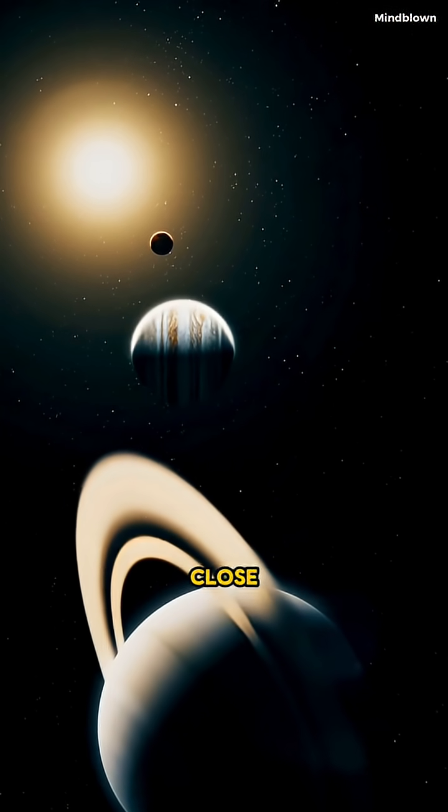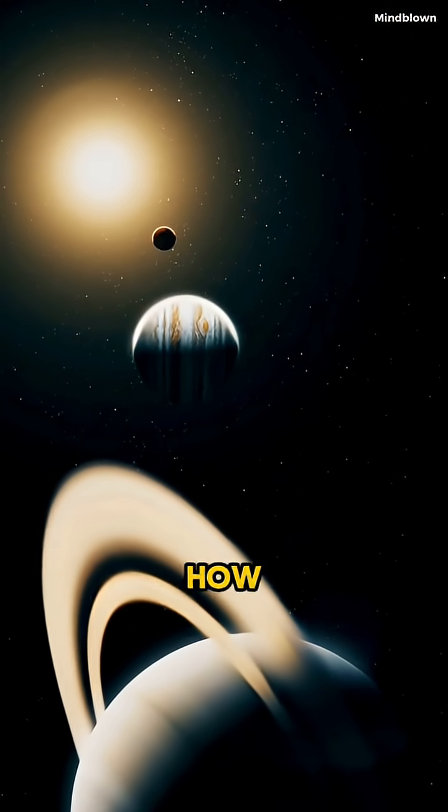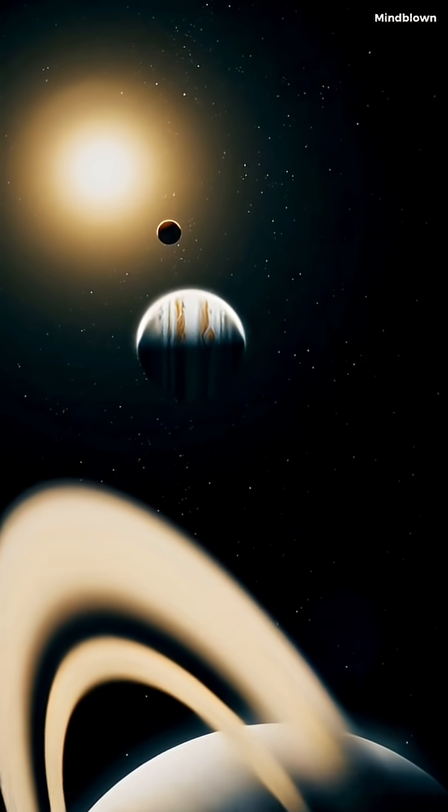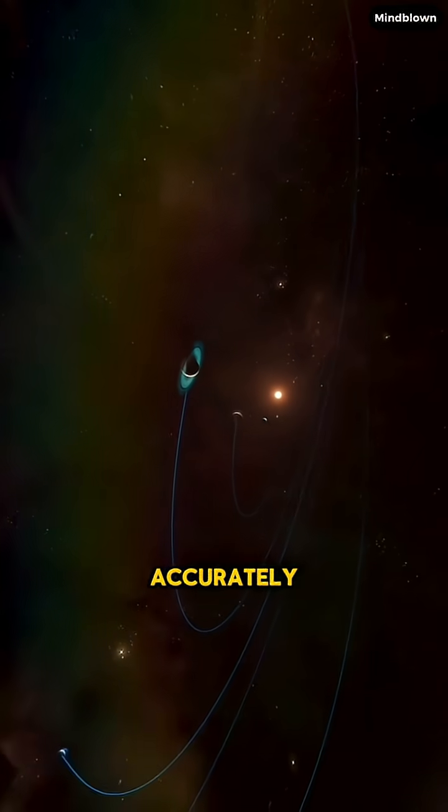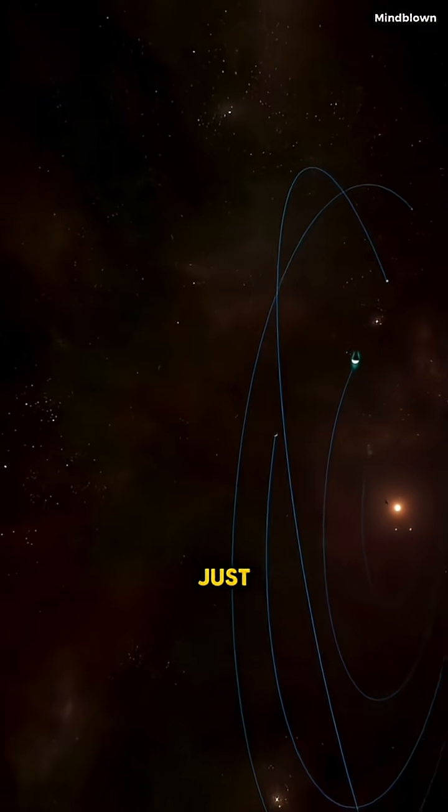When we show planets close together, it doesn't reflect how far apart they really are. In reality, the distances are so huge that if we wanted to show them accurately, we'd have to shrink the planets down to just dots.